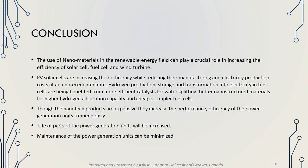From all of this discussion, we can conclude that the use of nanomaterials in the renewable energy field can play a crucial role in increasing the efficiency of solar cells, fuel cells, and wind turbines. PV solar cells are increasing their efficiency while reducing manufacturing and energy production costs. Hydrogen production, storage, and transformation into electricity in fuel cells are being benefited from more efficient catalysts for water splitting, better nanostructured materials for higher hydrogen absorption capacity, and cheaper, simpler fuel cells. Though nanotech products are expensive, they tremendously increase performance efficiency of power generation units, extend the life of parts, and minimize maintenance.